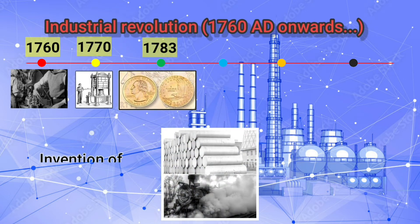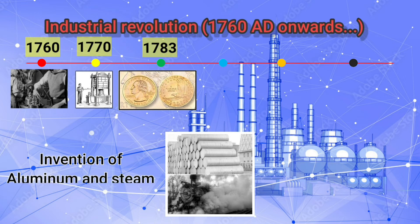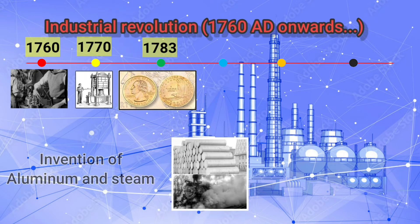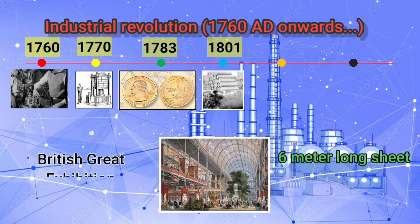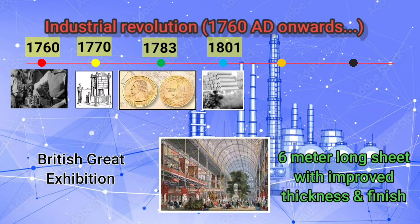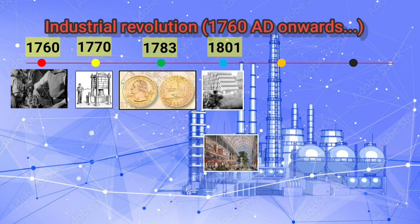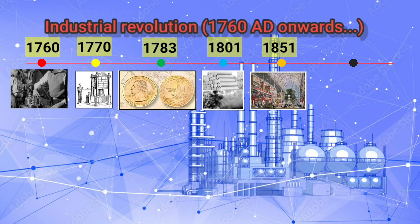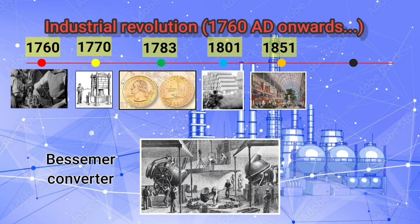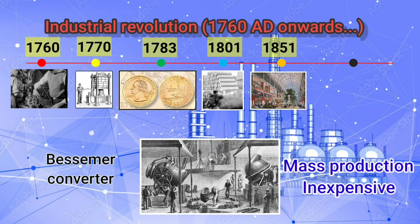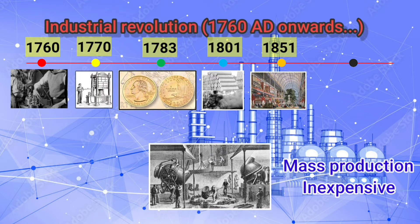Inventions related to aluminum and steam took place at the beginning of the 19th century. A long piece of sheet metal with improved specifications was shown at the British Great Exhibition in London in 1851. In 1857, the Bessemer converter became the first inexpensive process that allowed for the mass production of steel from cast iron.